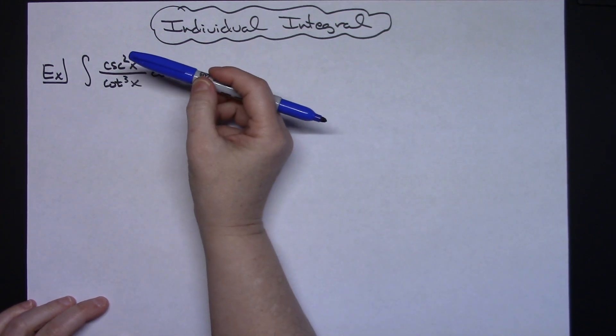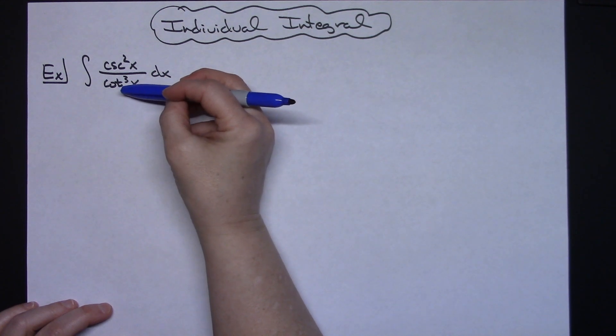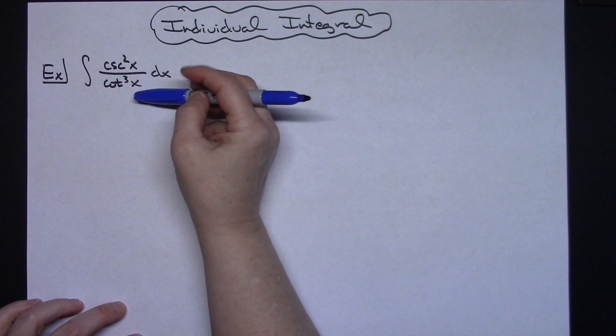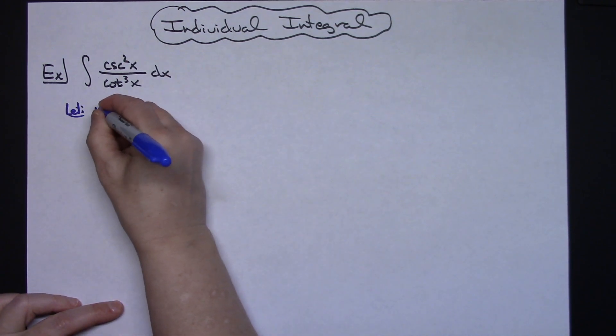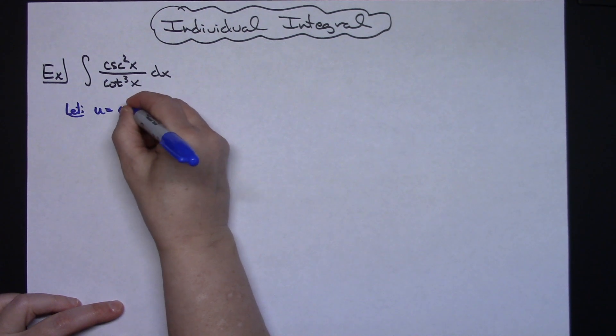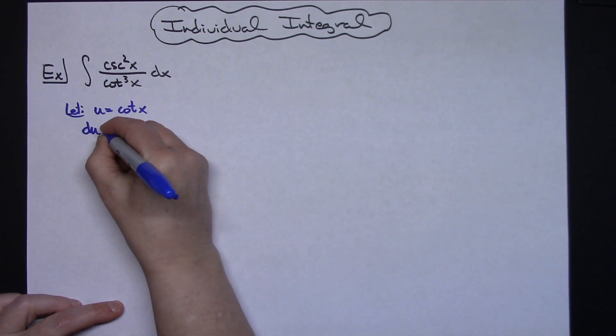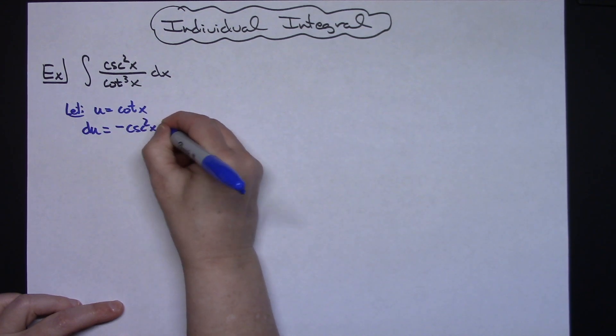Hopefully you know your derivatives well enough that you know that the derivative of cotangent is a negative cosecant squared. That's going to make this a nice u substitution. So we're going to start by letting u equal that cotangent of x. We're going to take the derivative of both sides so du is going to be equal to a negative cosecant squared x dx.